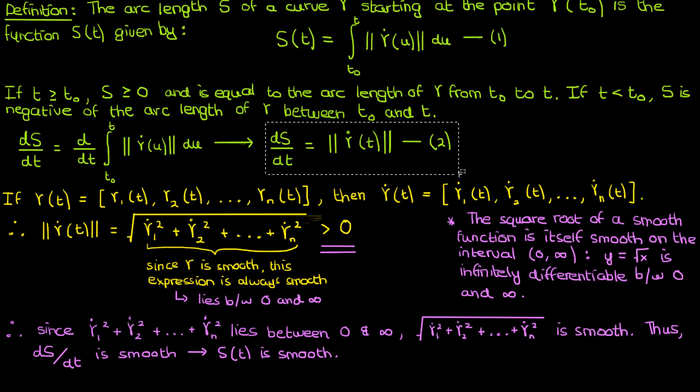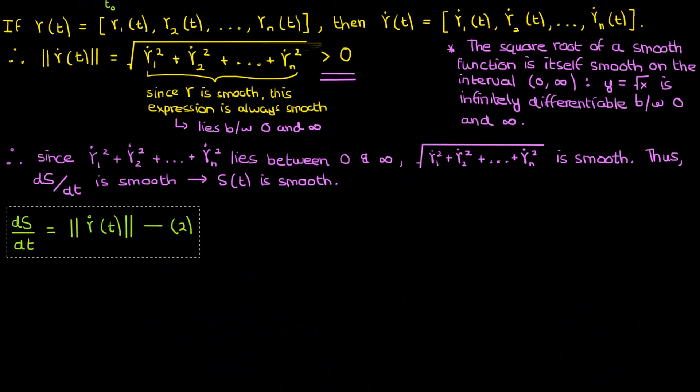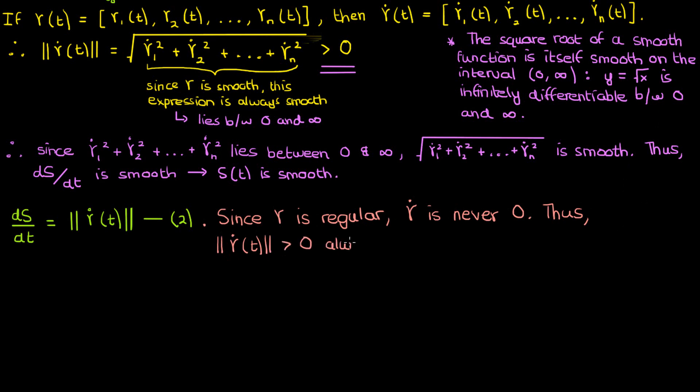And to do this, we'll take the equation for ds/dt or equation 2 as we called it from earlier. Now notice that in this equation, the rate of change of arc length with respect to the original parameter t was the magnitude of the derivative of the curve γ. And now also remember that γ is a regular curve; its derivative is never 0. As a result, its magnitude by virtue of being a magnitude must always be positive. Recall that a magnitude can either be 0 or positive, but since γ̇ is never 0, that only leaves positive as our option.